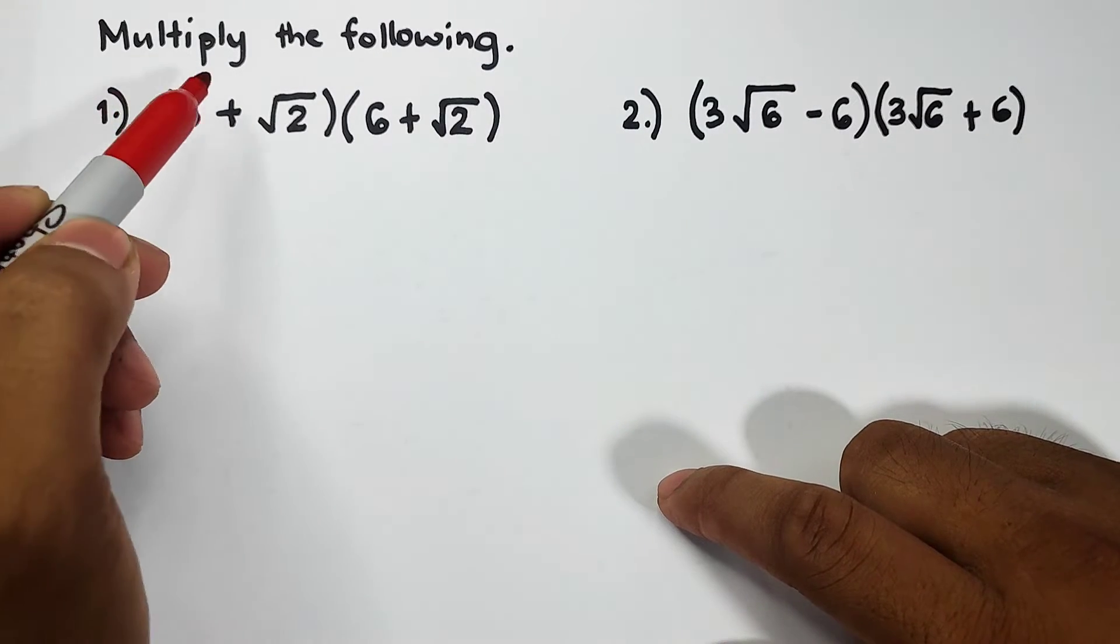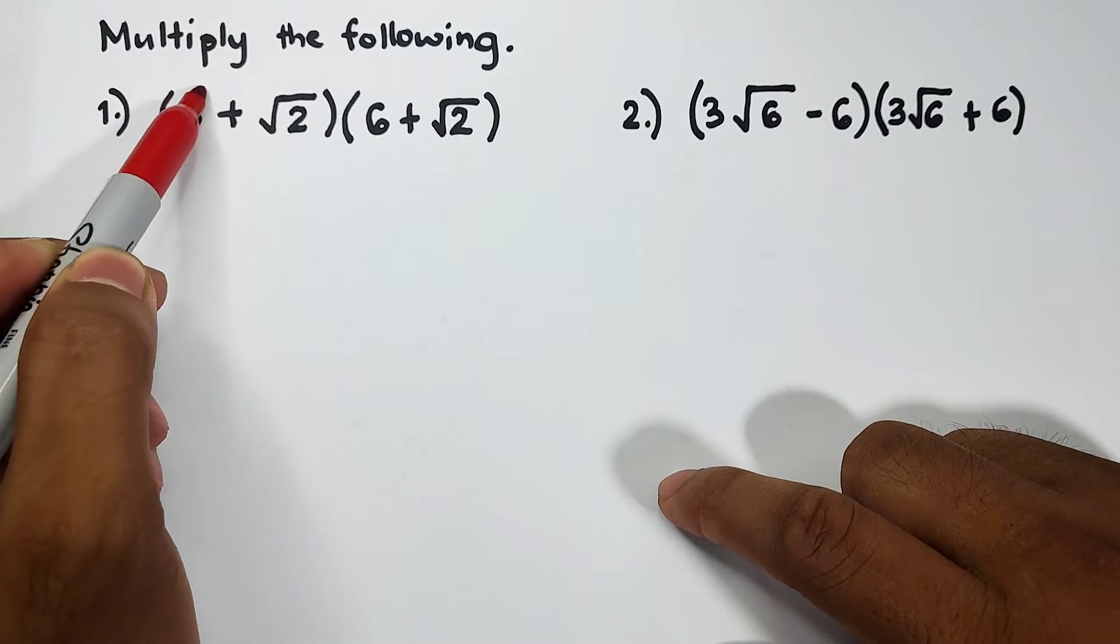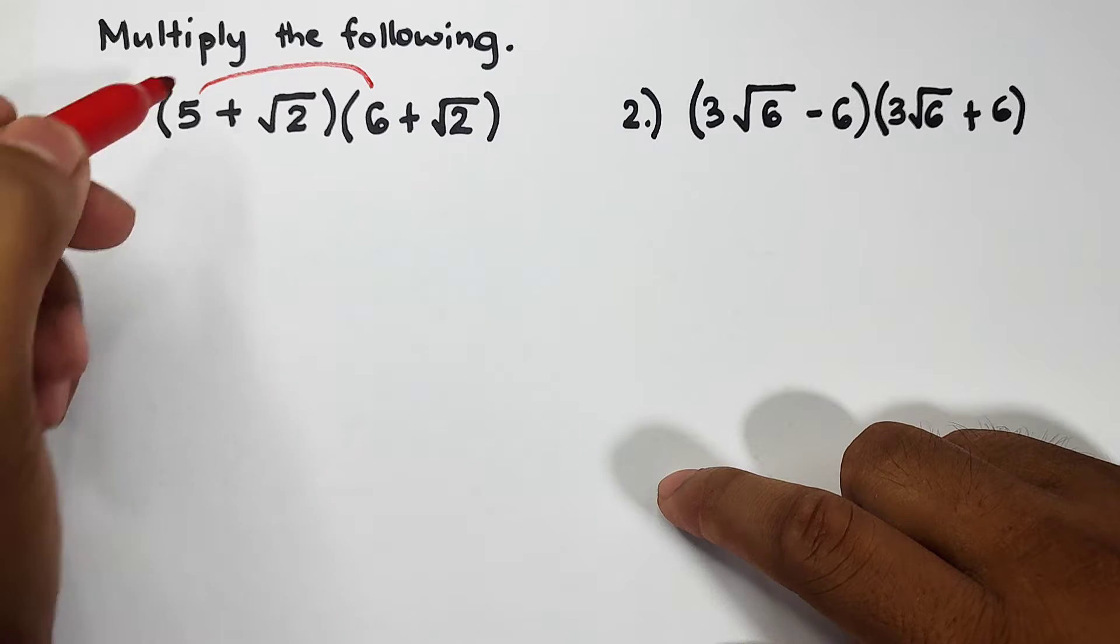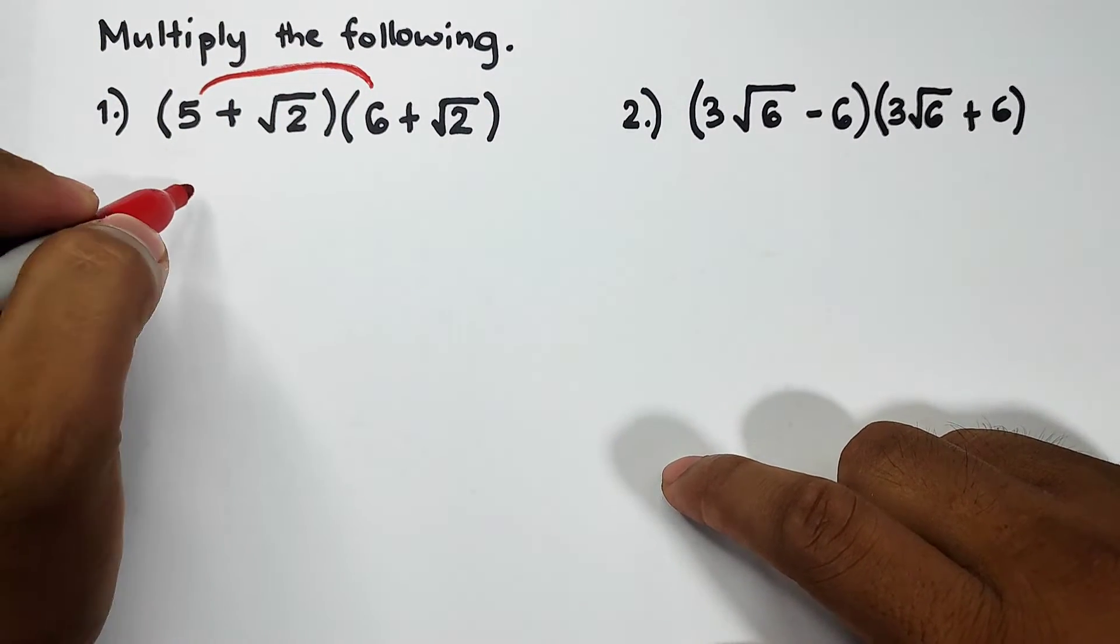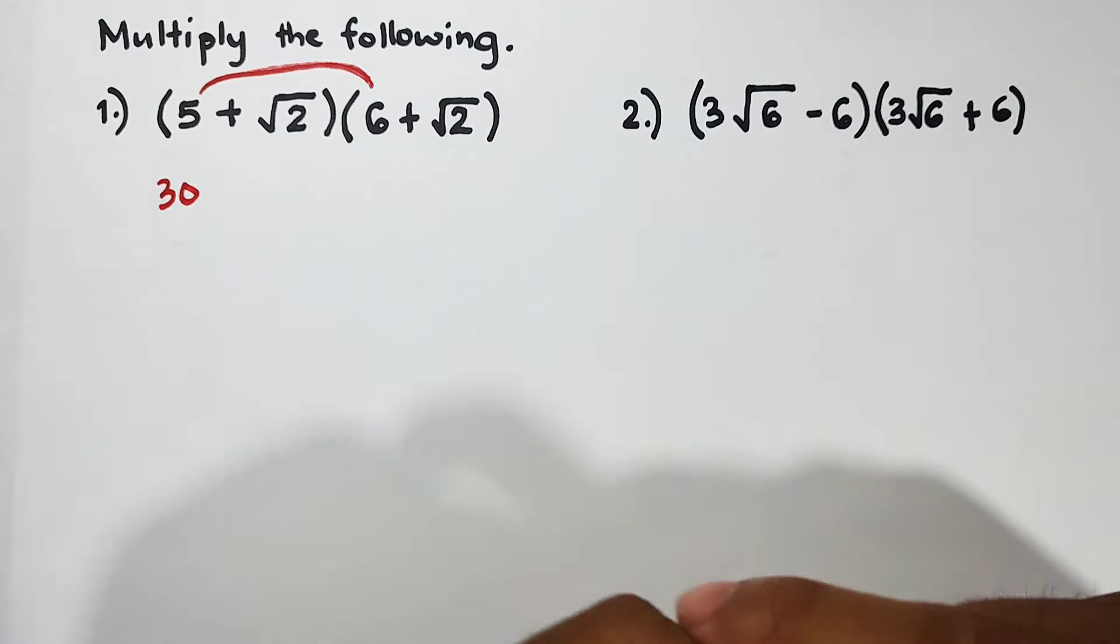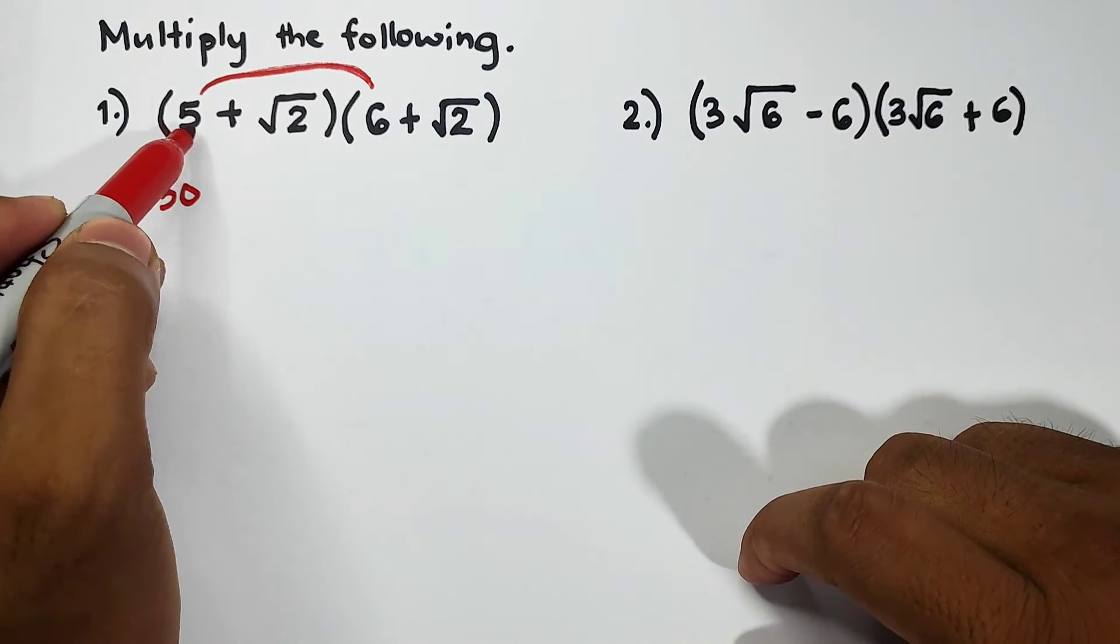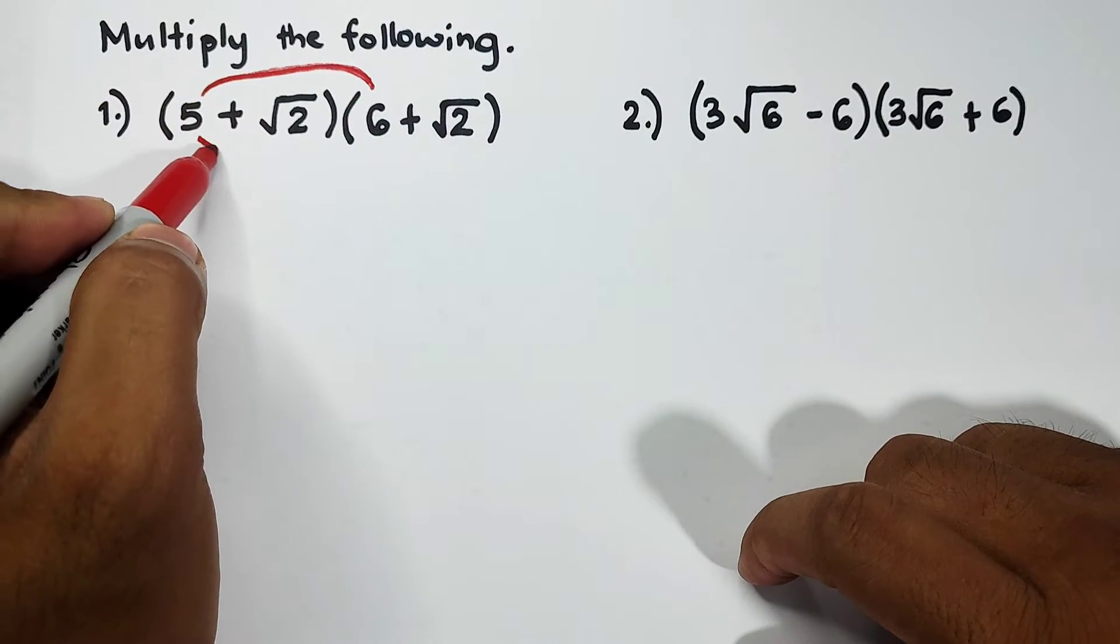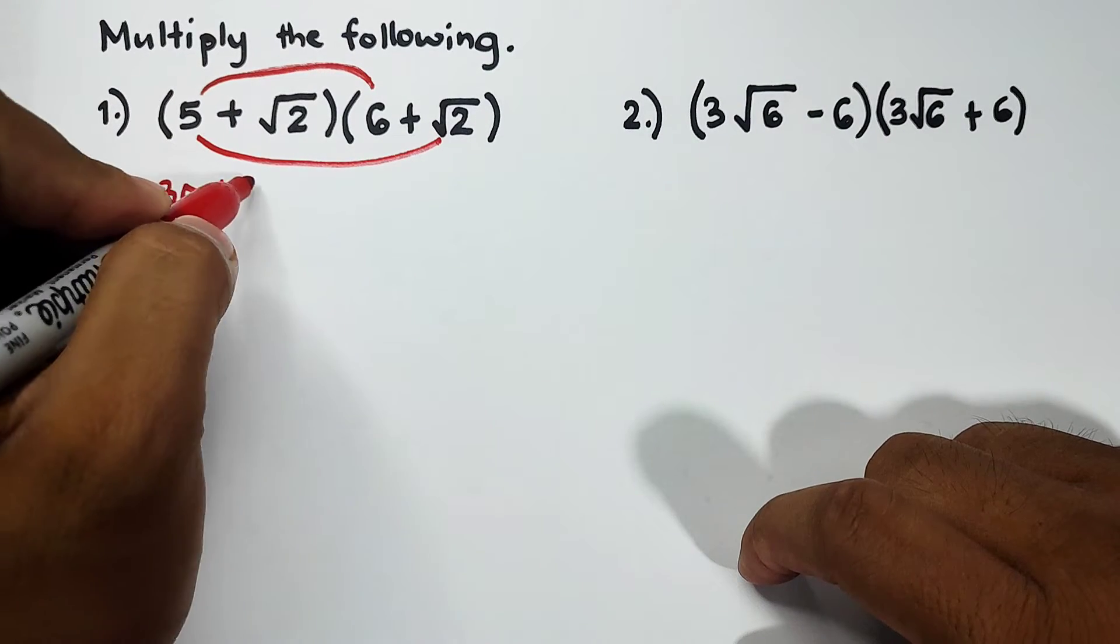For the first terms you will multiply 5 and 6, so we have 5 times 6 and that is 30. Next we have the outer terms, that is 5 and square root of 2. Let us multiply 5 and square root of 2, that is plus 5 square root of 2.